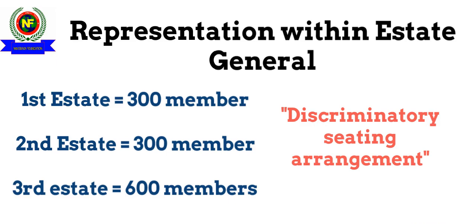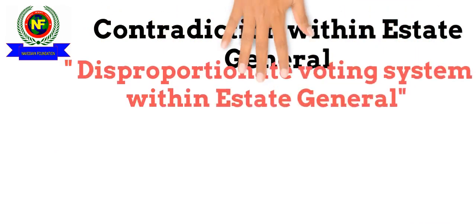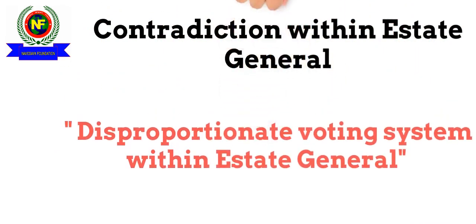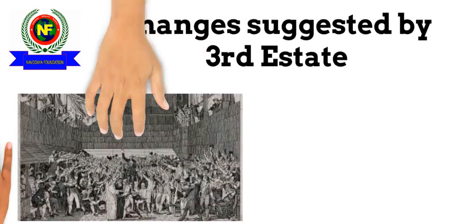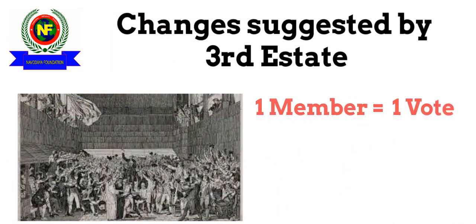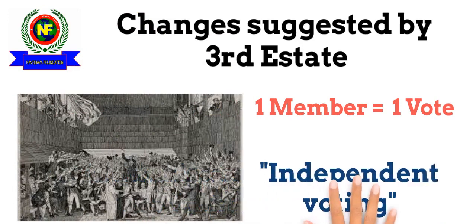There was a strange contradiction: the taxation burden was already on the third estate, and the voting system, which gave a single vote to each estate, resulted in the first two estates commanding a majority. Thus, the entire taxation burden, if imposed, was to fall on the third estate. This contradiction was not acceptable to the third estate, so they suggested a change in the voting system from one estate, one vote to one member, one vote — also termed as the independent voting system.